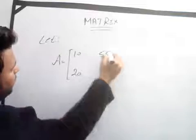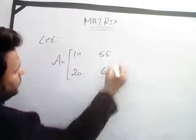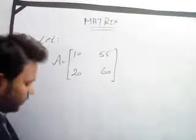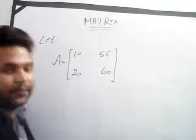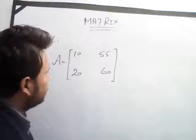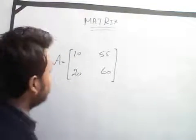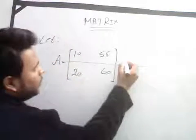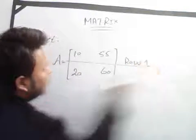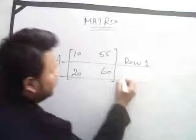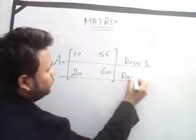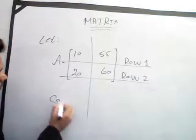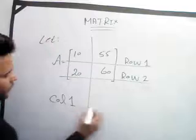So how can we find the order of this matrix? This one is row one and this one is row two. In this direction, this one is column one and this one is column two. So there are two rows and two columns.